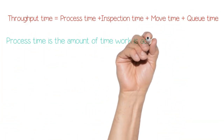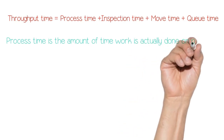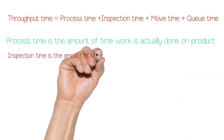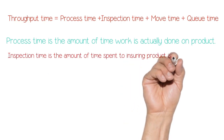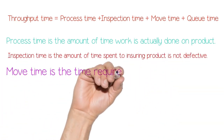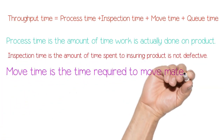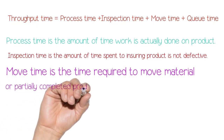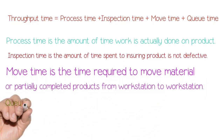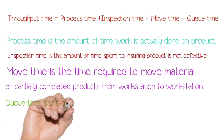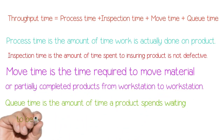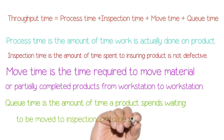Process time is the amount of time work is actually done on the product. Inspection time is the amount of time spent on ensuring the product is not defective. Move time is the time required to move material or partially completed products from workstation to workstation. Queue time is the amount of time a product spends waiting to be moved, to inspection, or to be shipped.